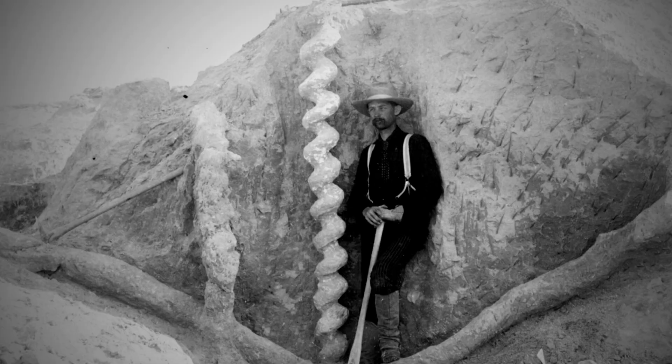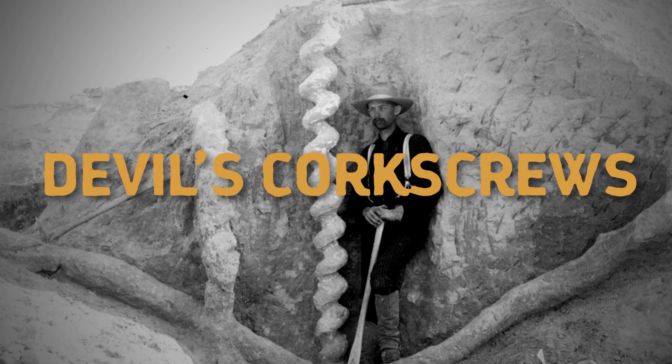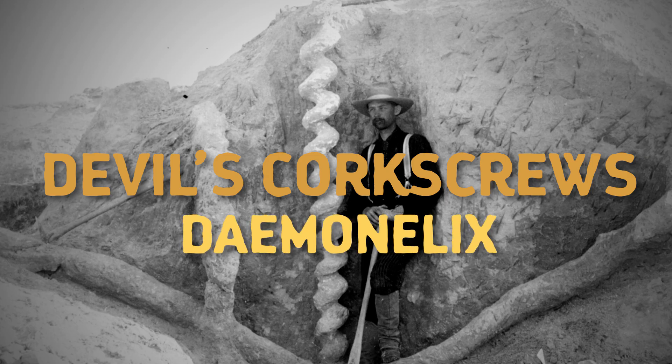They're just giant, perfect corkscrews in the sand. It turns out that local ranchers have known about these weird spirals for a long time, and they call them Devil's Corkscrews, a name that you and your fellow scientists later change to the Latin name Daemonohelix.